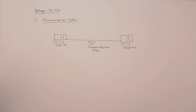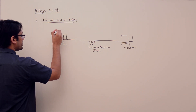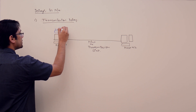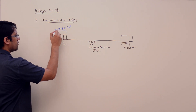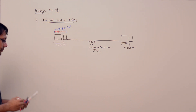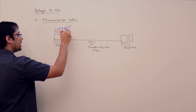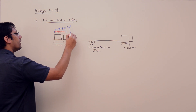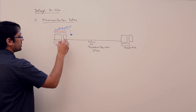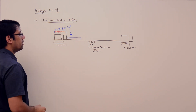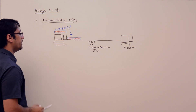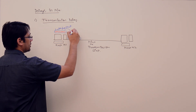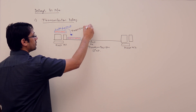Host H1 is communicating with host H2, and for communicating, H1 is sending some data packets to H2. Assume this is a data packet which may have some bits — for example, 1 1 0 1 1 1 0 0 1 1 and so on. The time taken to place this complete data packet on the transmission media is called as transmission delay, or you can say transmission time.